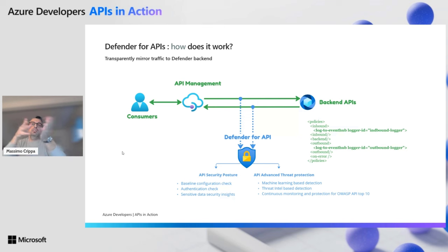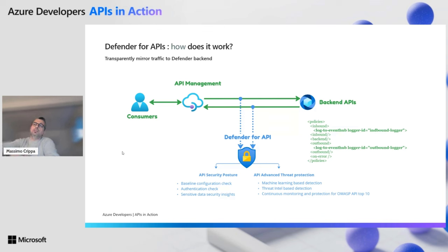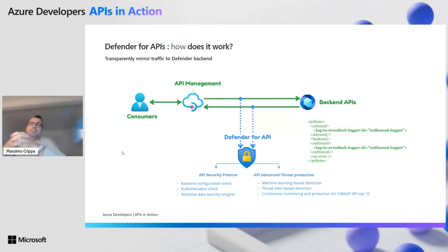So Defender can implement API security posture checks, but we can also implement advanced threat protection, meaning using machine learning-based detection to continuously assess whether our traffic is secure. This advanced threat protection implements checks towards the OWASP API Top 10 threats. Let's go a little bit more into detail and see what we will learn by using this tool — let's make it practical.